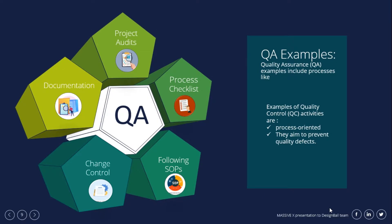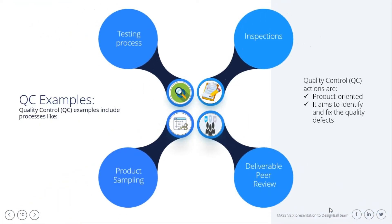Quality assurance is process-oriented and aims to prevent quality defects. Therefore, its examples include documentation, project audits, process checklists, following SOPs, and change control. Quality control is product-oriented and aims to identify and fix quality defects. Therefore, its examples include testing processes, inspections, deliverable peer reviews, and product sampling.